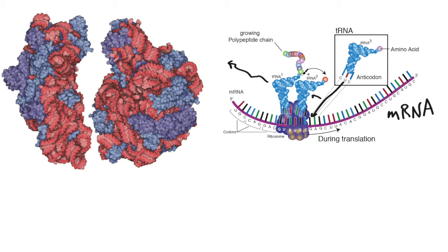Then this tRNA diffuses away. Since this one likes the green amino acid and there are more green amino acids floating around, a new one attaches and can participate within the ribosome. The ribosome molecule creates an environment where the correct tRNA comes next to the mRNA, attaches, and flips the polypeptide or protein to the next one.